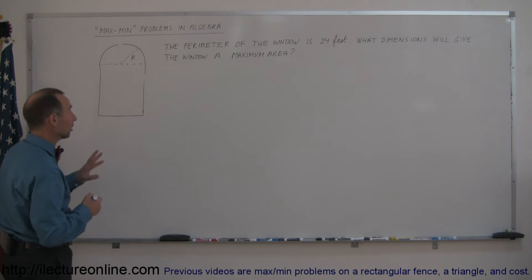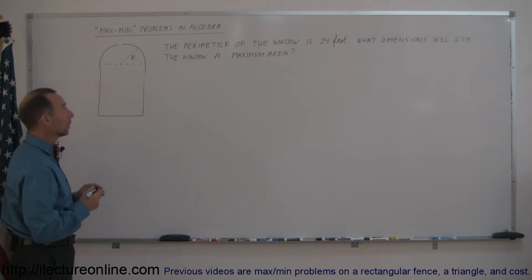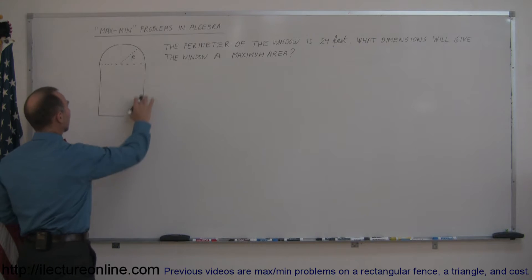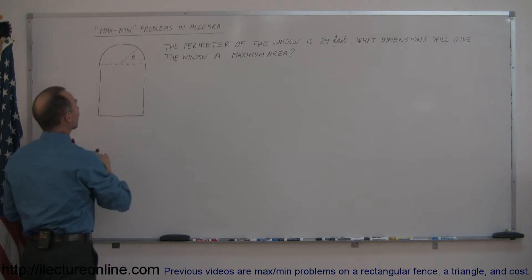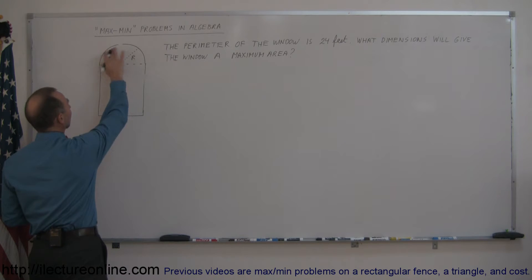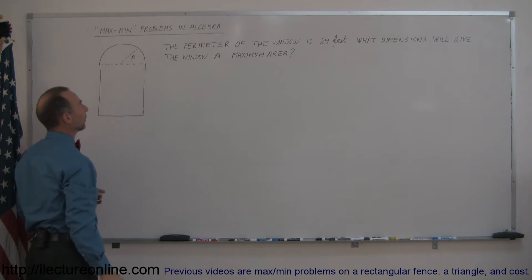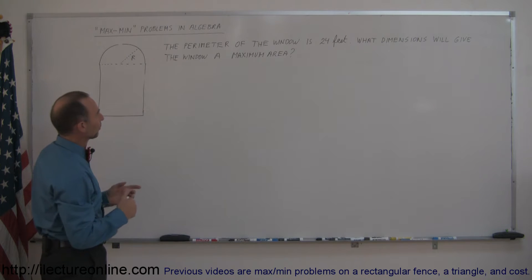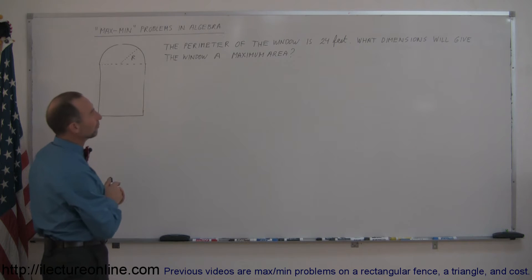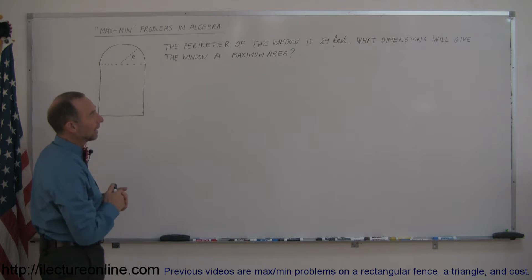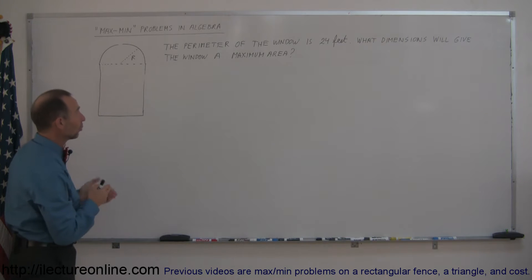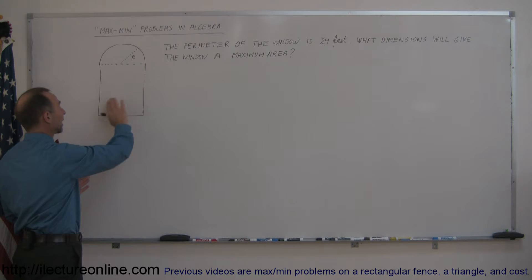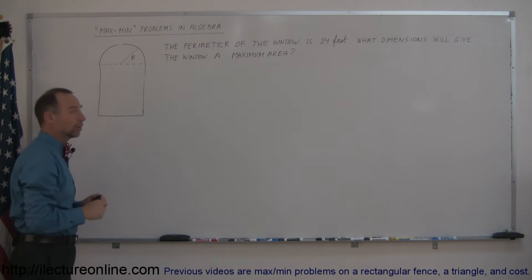Now this is a little bit more difficult of an example. We have a window that has a rectangular base and a semi-circular top, and the perimeter of this window is supposed to be 24 feet. The question is: what dimensions will give you the maximum size window — in other words, the maximum area of the window.